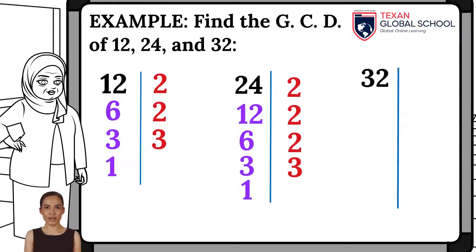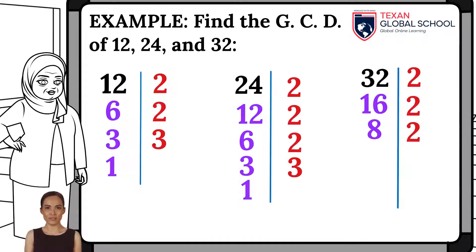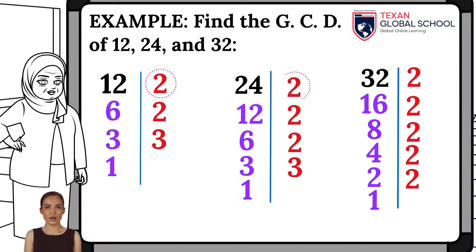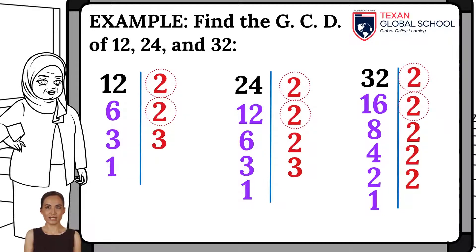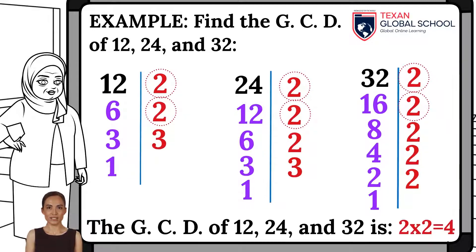The prime factors of 32 are 2, 2, 2, 2, 2, and 2. As we can see, all numbers have the same prime factor, which is 2. However, the maximum factor is 4, since it is the largest integer that can divide all the numbers.